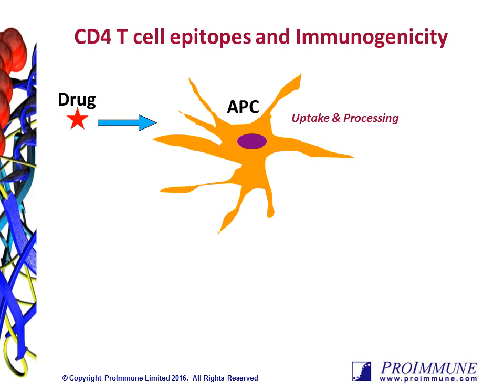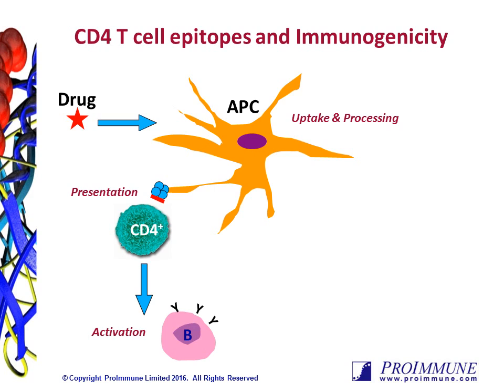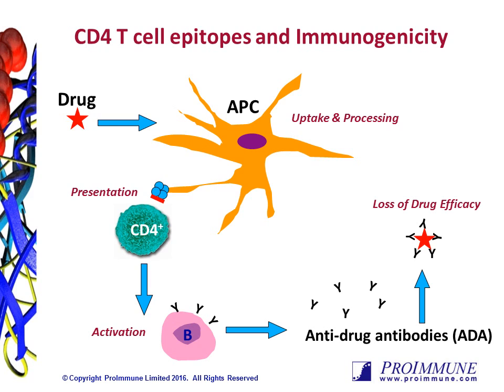In this cartoon, the drug is first taken up and processed by a professional antigen presenting cell, such as a dendritic cell. Those DCs will present peptide epitopes within the context of an MHC class II molecule to helper CD4 T-cells. This interaction is key in driving the remainder of the response, as the activated T-cells can provide help to the B-cells. Activated B-cells can then secrete anti-drug antibodies, which can result in a loss of efficacy, altered PK and PD, and cross-reactivity.